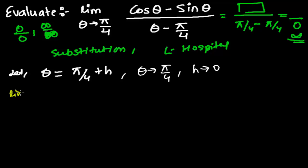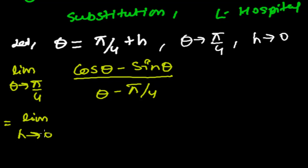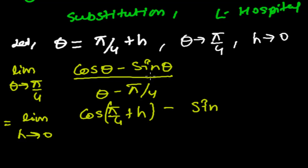Now let me write the problem. Limit when theta tends to pi by 4 of cos theta minus sine theta, divided by theta minus pi by 4. Next step: limit when h tends to zero, substituting theta as pi by 4 plus h. So we get cos(pi by 4 plus h) in the numerator.